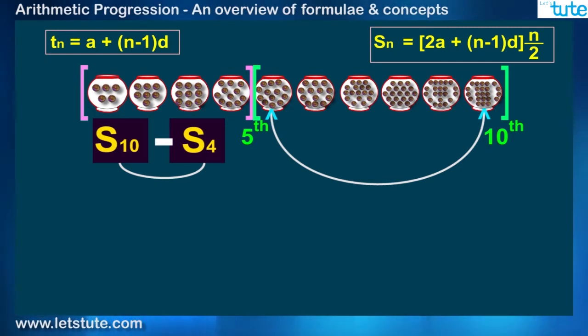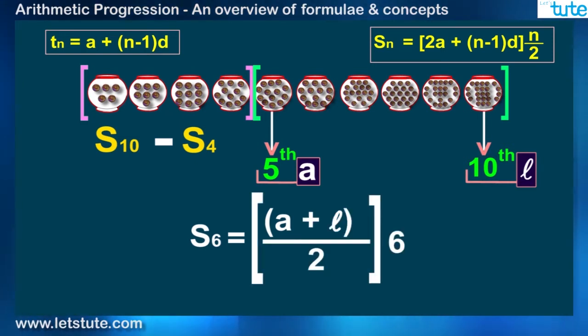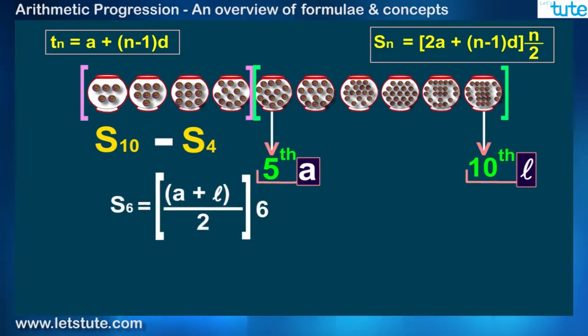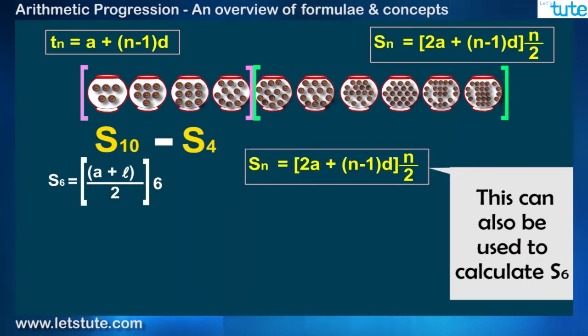There is one more way by which you can solve this. First find the 5th term and then the 10th term, which is actually the last term of the range. Then we have S6, which is equal to A plus L upon 2 into 6. Now this is the average of the first and the last term multiplied by the number of terms.